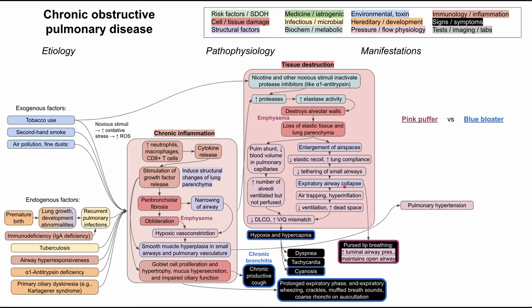One other manifestation from this pathway is the expiratory airway collapse. People's airways are falling in on themselves and trapping air. One way the body subconsciously works around this is pursed lip breathing — essentially increasing luminal airway pressure to maintain an open airway. By blowing out with pursed lips, they create back pressure into the lungs while breathing out, keeping their airways open so they don't collapse and allowing them to get more of their breath out.